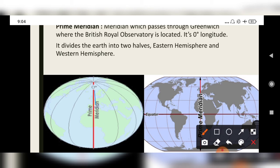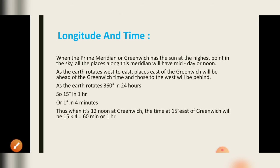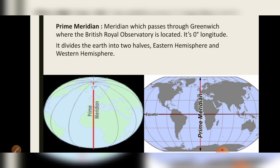When it is 12 noon at Greenwich, the time at 15 degrees east of Greenwich will be 15 × 4 = 60 minutes, or 1 hour ahead — meaning 1 pm. This is your prime meridian, and this one is 15 degrees east. So the meridian at 15 degrees east will be 1 hour ahead. Suppose it is 12 o'clock at Greenwich, then at 15 degrees east it would be 1 pm.